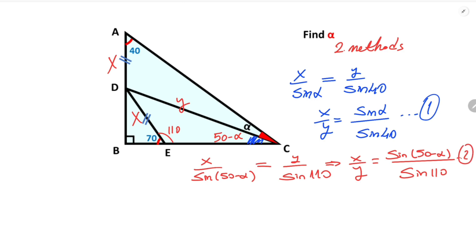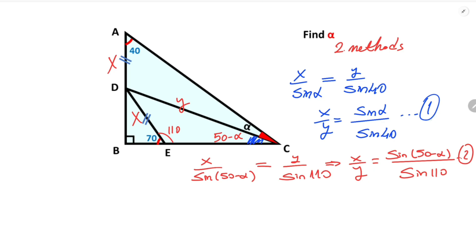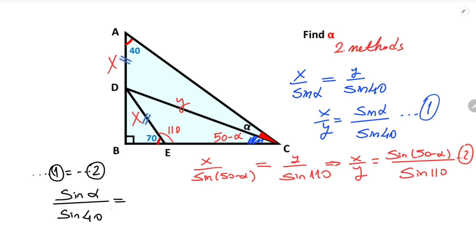Now, if you notice that the left-hand sides of the equations are equal, that means the right-hand sides must also be equal. Therefore if we equalize the first and second equations, sine alpha over sine 40 must equal sine(50 minus alpha) over sine 110 degrees.